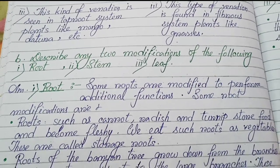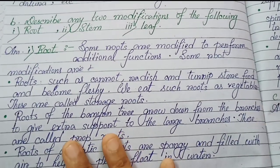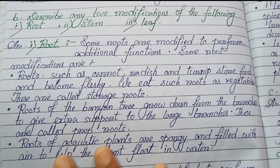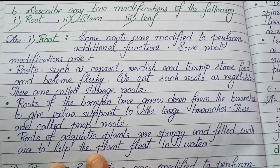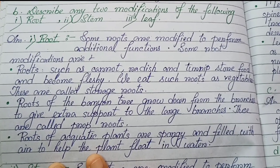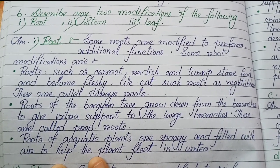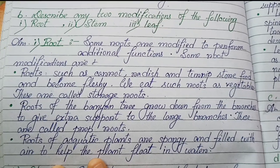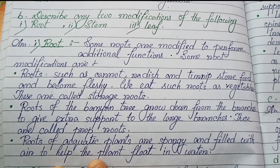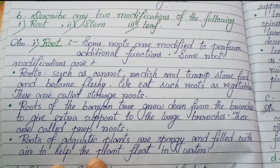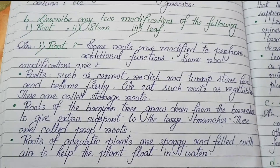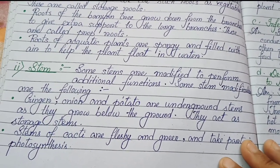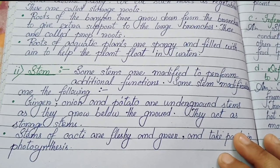Number (b): Describe any two modifications of root, stem and leaf. Root modifications: (1) roots such as carrot, radish and turnip store food and become fleshy — we eat such roots as vegetables, these are called storage roots; (2) roots of the banyan tree grow down from the branches to give extra support to the large branches, these are called prop roots; (3) roots of aquatic plants are spongy and filled with air to help the plant float in water.